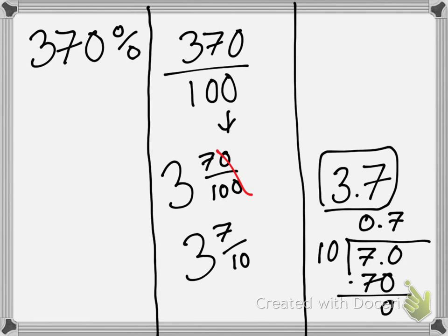And we already knew that. Again, if we did it based on the decimal form, we'd move it over 1, 2, and we would get 3.7. Same thing.